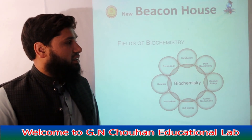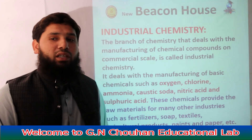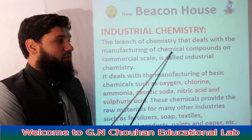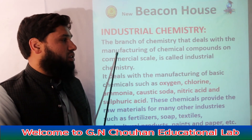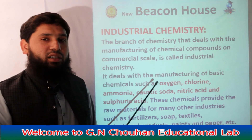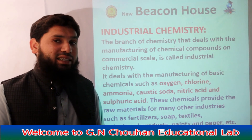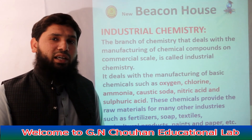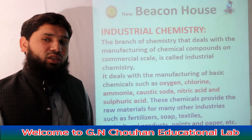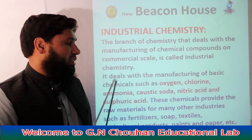اگلی branch ہے industrial chemistry۔ Industry کا simple مطلب factory ہے۔ یہ chemistry کی وہ branch ہے جس میں chemical compounds کی manufacturing کے طریقوں کو study کیا جاتا ہے، اور وہ تیاری commercial scale یعنی industrial level پر ہوتی ہے۔ جیسے hospital میں patient کو جو oxygen دی جاتی ہے وہ کسی industry میں بنائی گئی ہوتی ہے۔ Daily life کے بہت سے compounds بہت بڑے پیمانے پر تیار کیے جاتے ہیں، اور ان کی تیاری کے طریقوں کو industrial chemistry کہتے ہیں۔